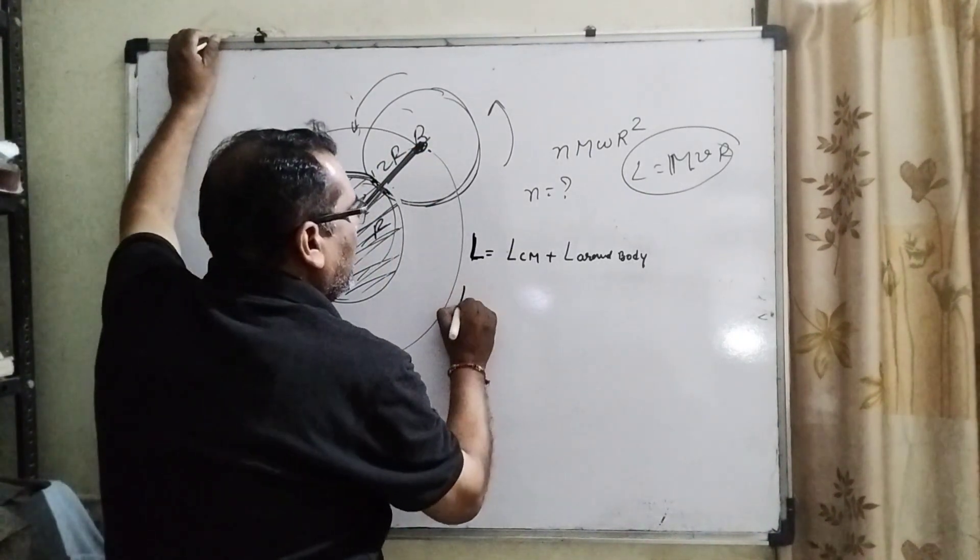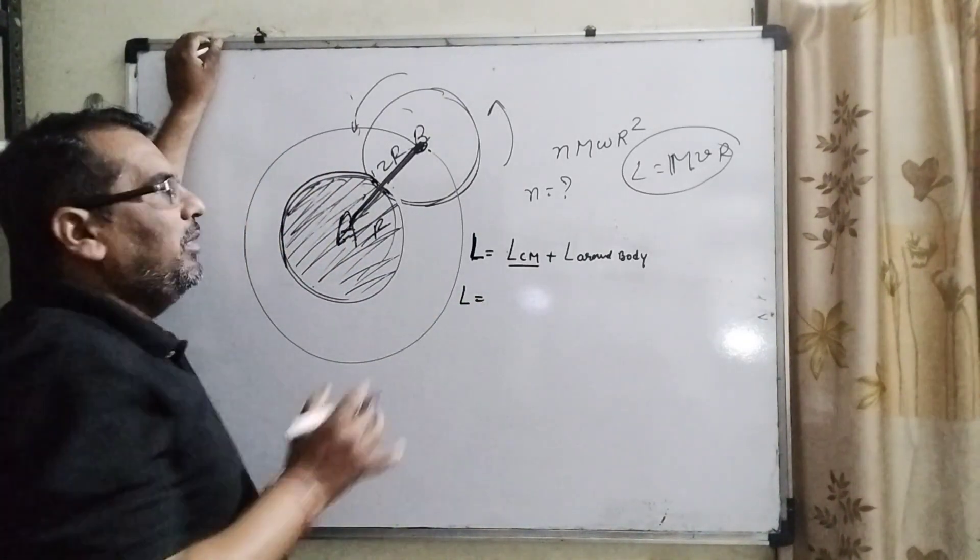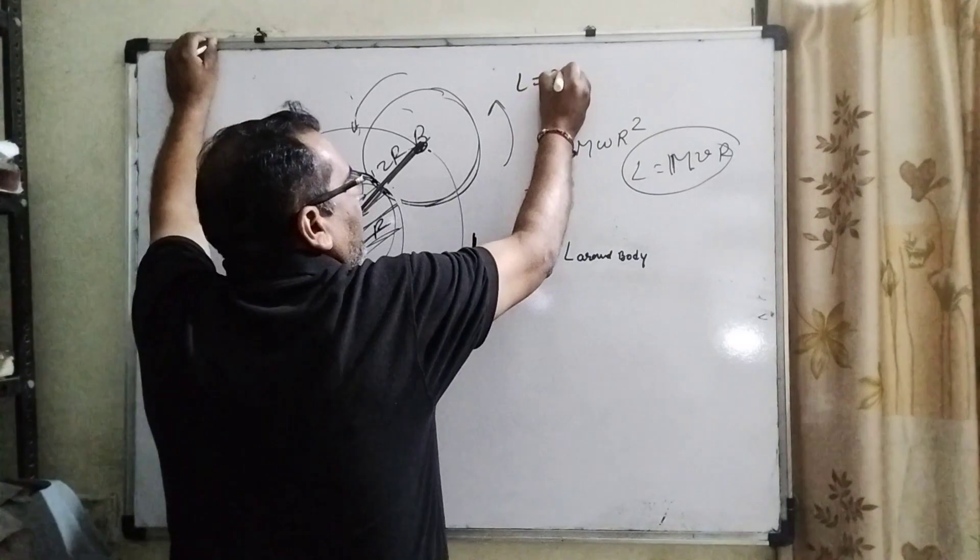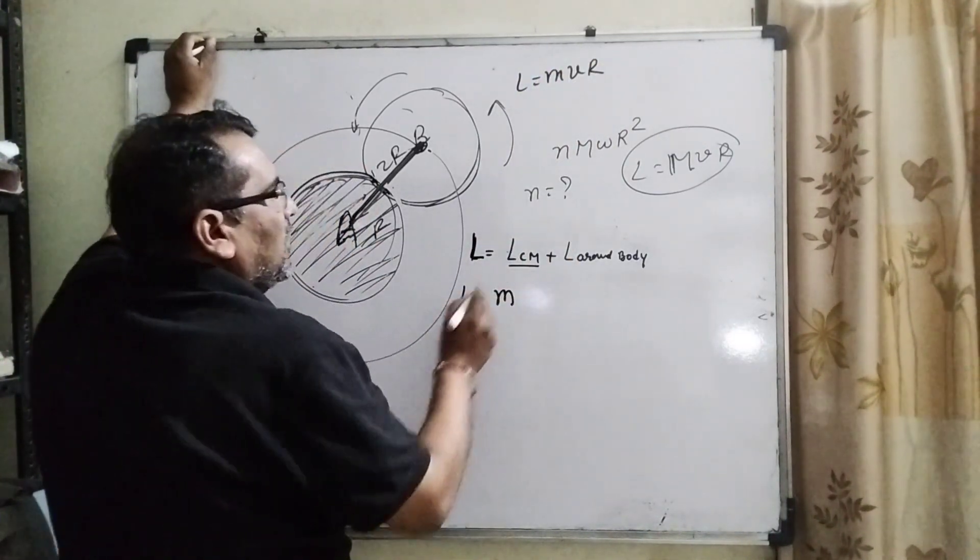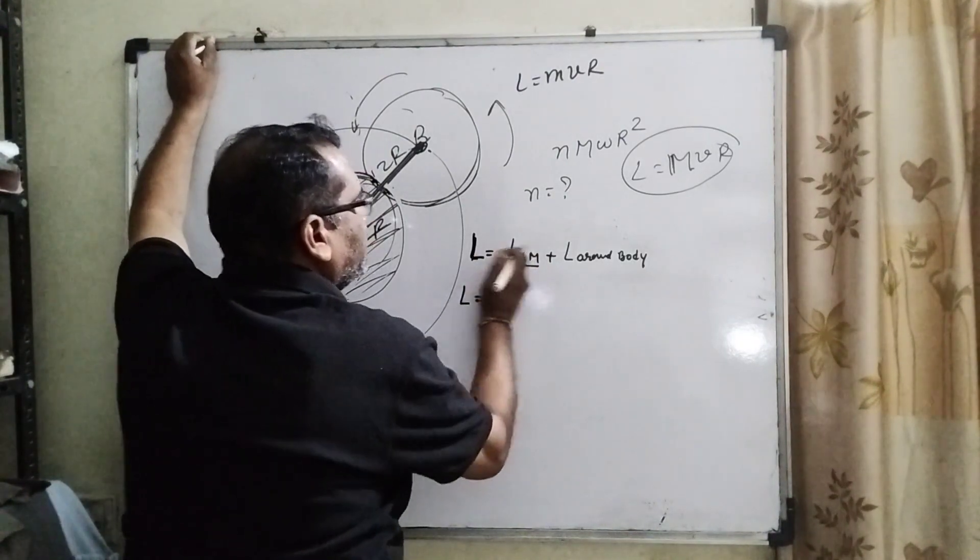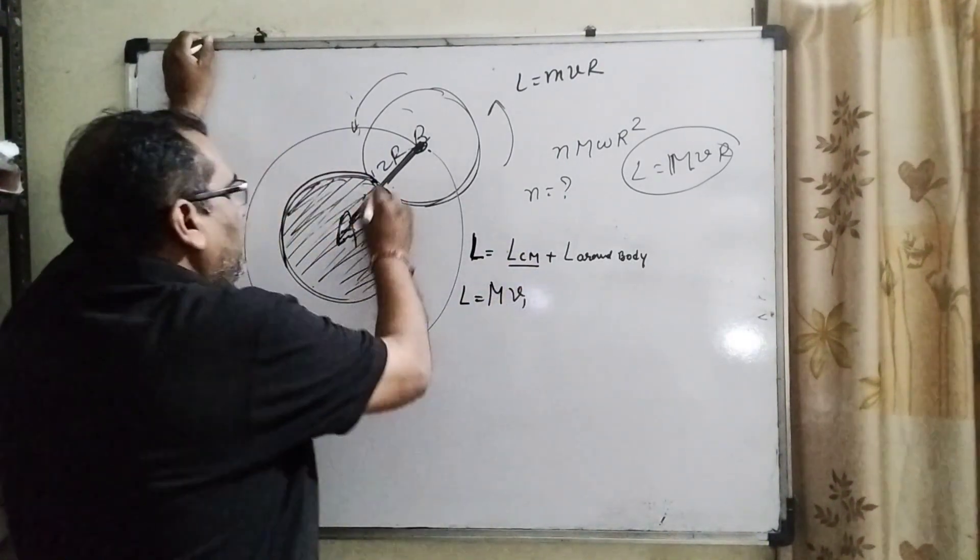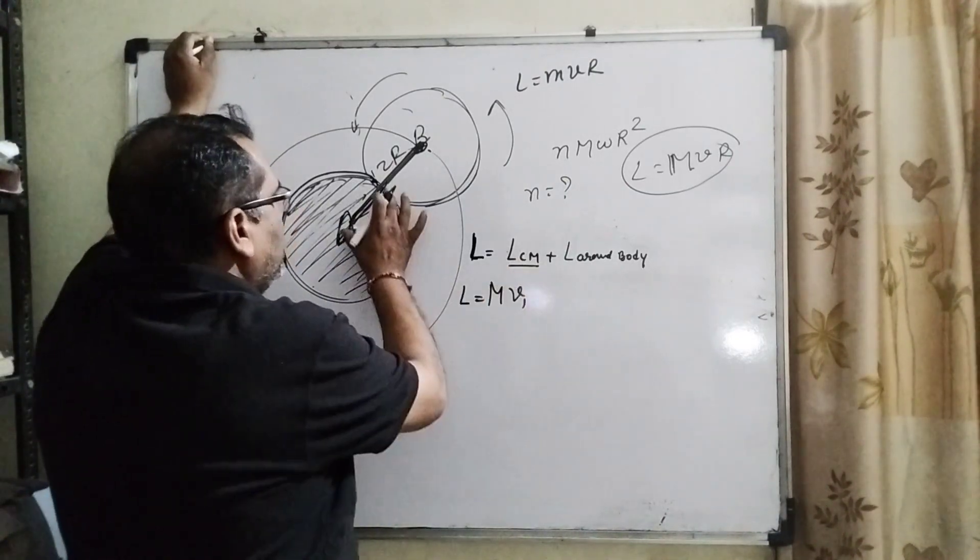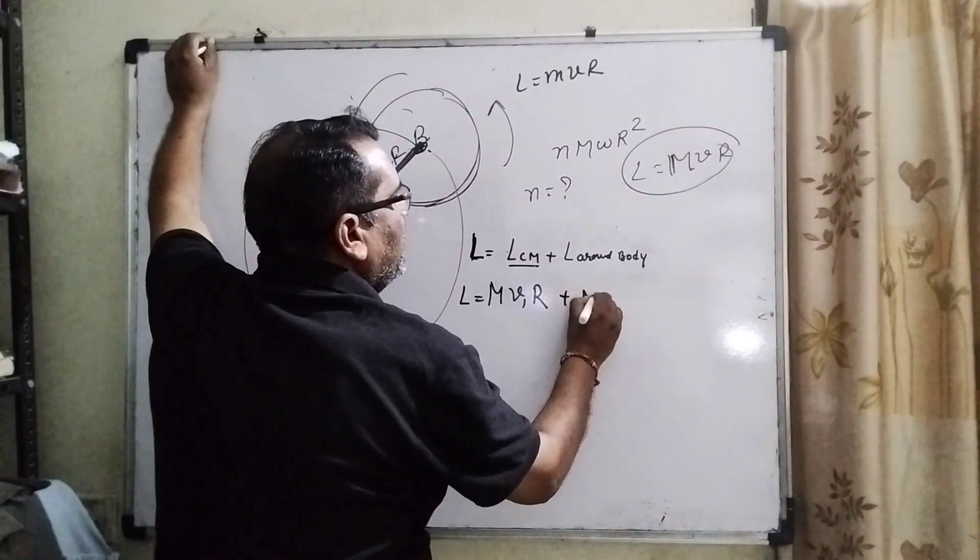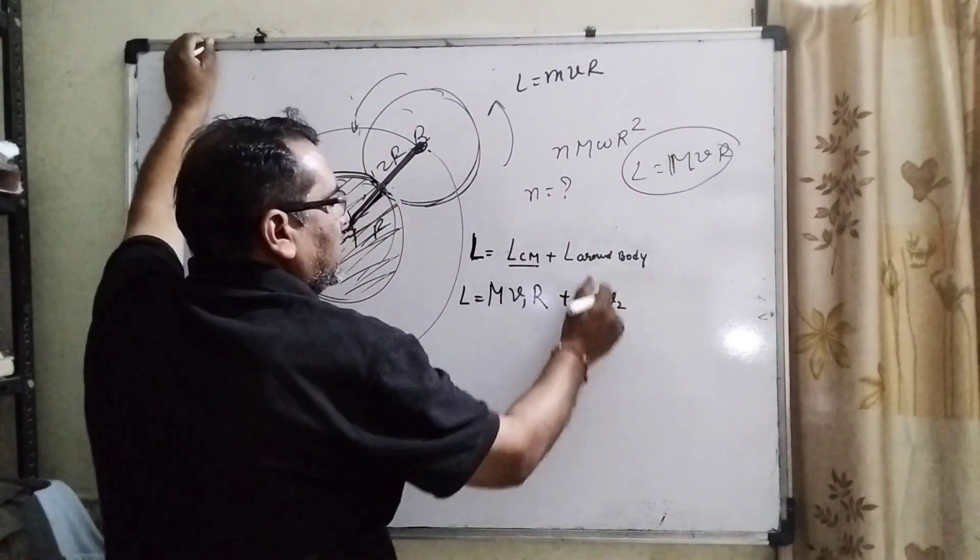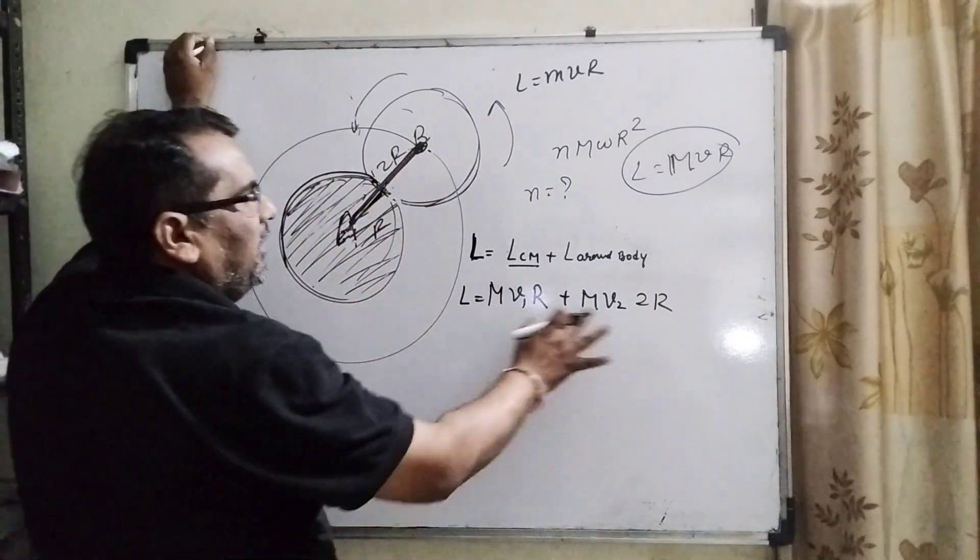So therefore L equals, using the formula of angular momentum L equals M V R. So mass M is given. M V1 and R, the distance of center of mass is R, plus M V2 and the distance is 2R from A to B.